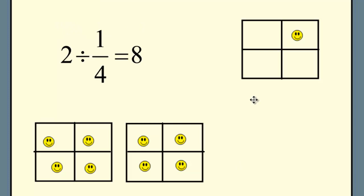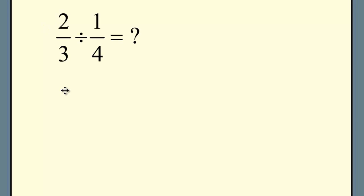Let's try another problem, this time couched in a word problem. I have two thirds of a pound of cheese. I'm going to be making meatballs, and each meatball needs one fourth of a pound. How many meatballs can I make from my two thirds pound of cheese? In other words, I'm asking how many of the second number does it take to make the first number?